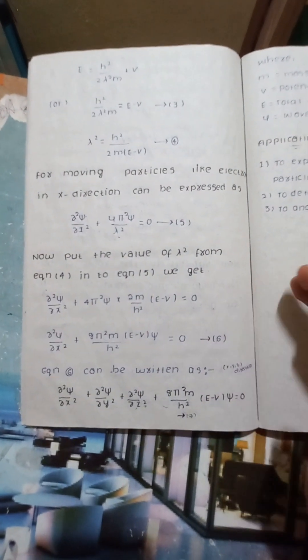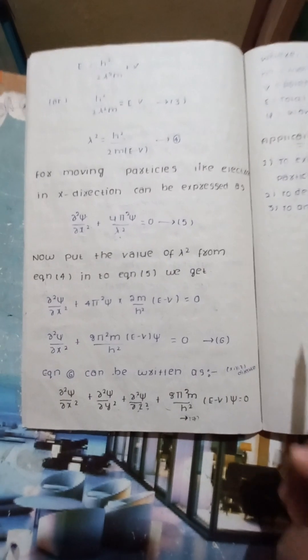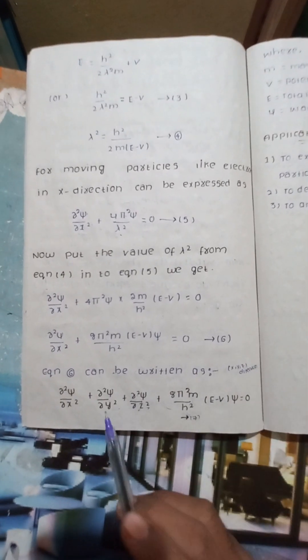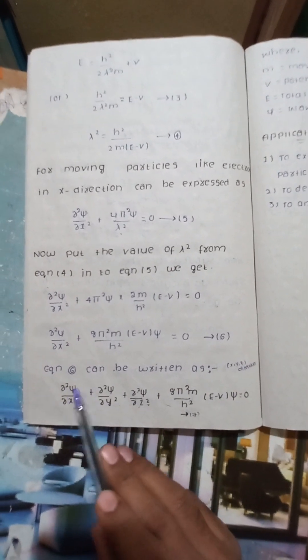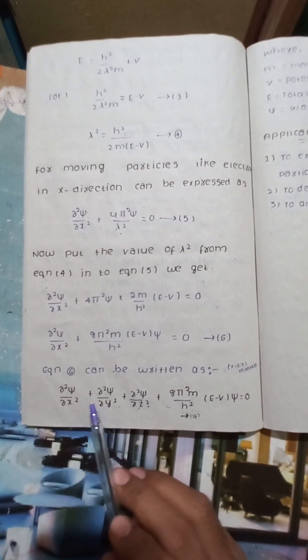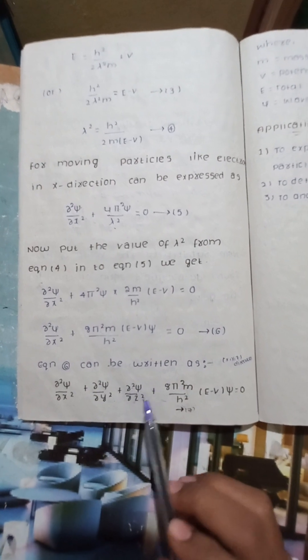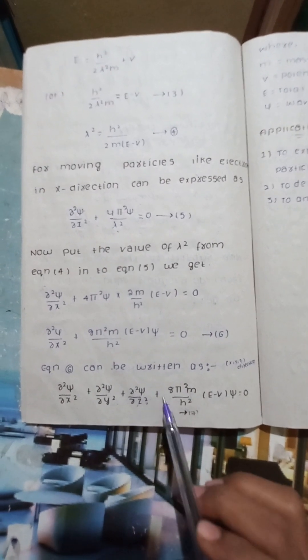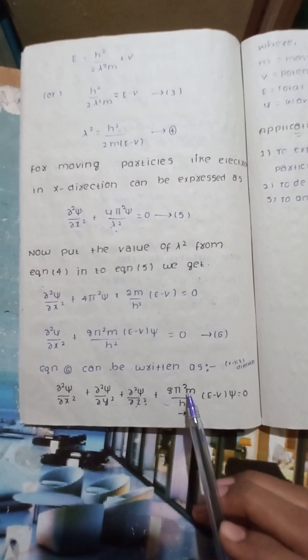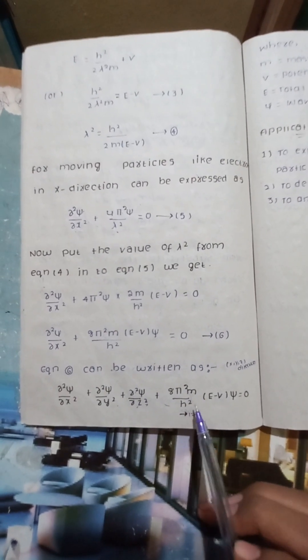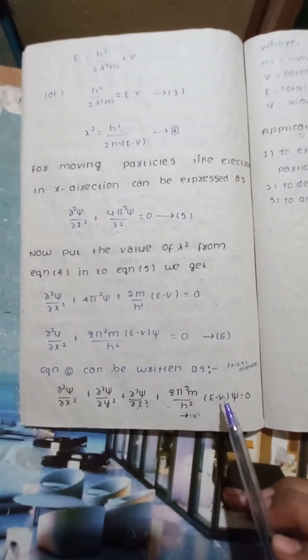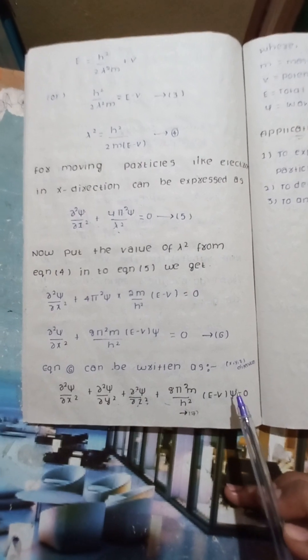The simplified result gives us: ∂²ψ/∂x² + ∂²ψ/∂y² + ∂²ψ/∂z² + (8π²m/h²)(E − V)ψ = 0. This is the three-dimensional Schrödinger wave equation.